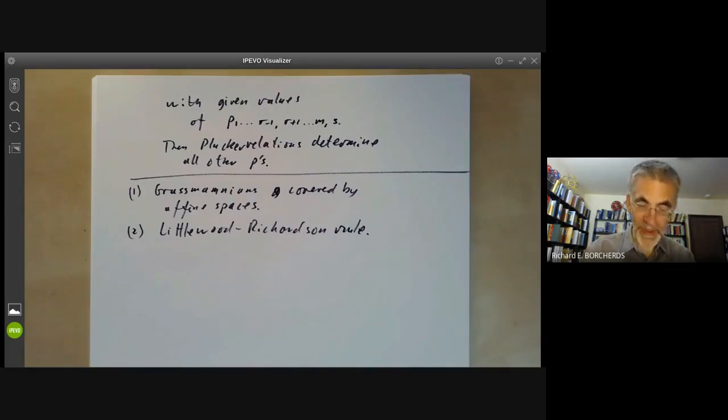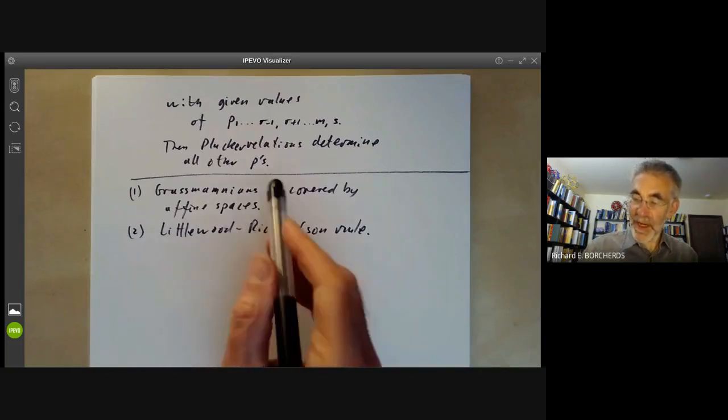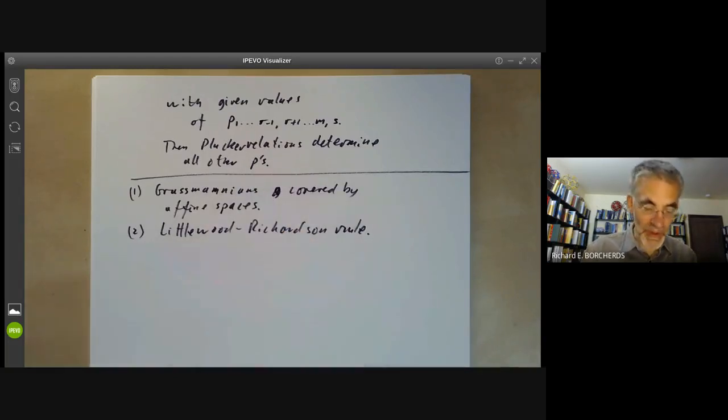which I'm not going to give explicitly, but you can look it up on Wikipedia. So the Littlewood-Richardson rule is really several different things. There are lots of different ways of looking at it. But one way of looking at it is it gives you the product of the cohomology of Grassmannians.